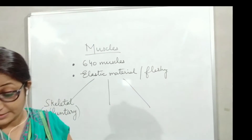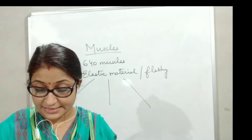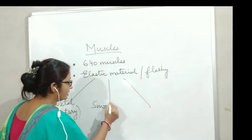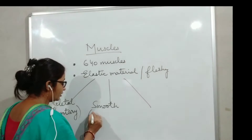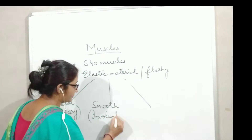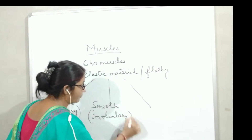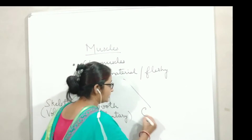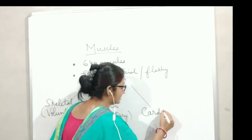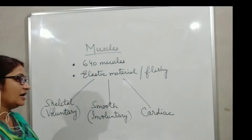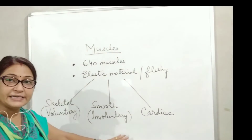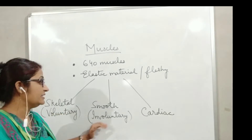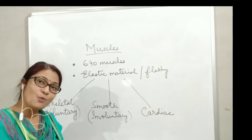The second kind of muscles are known as the smooth muscles, or we can also call them involuntary muscles. And the third one, they are known as the cardiac muscles. Now we have to learn about these three types of muscles one by one.